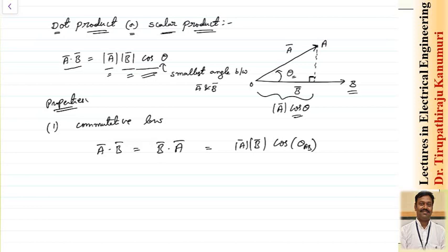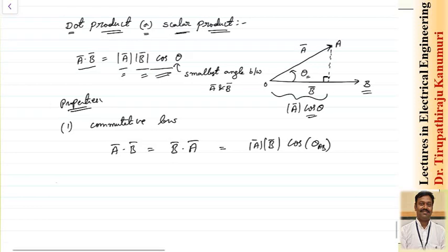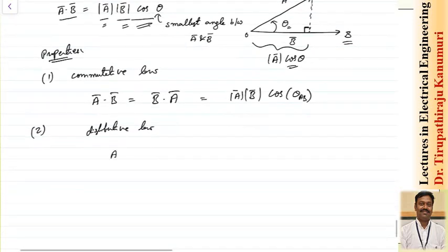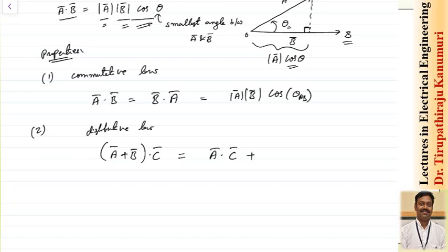This is the first property. The second property is this also follows the distributive law. The distributive law can be written like this: if I have the sum of two vectors a plus b and I want to do the dot product with c, this can be given by a dot c plus b dot c.